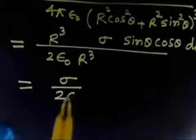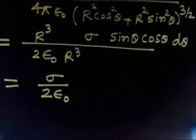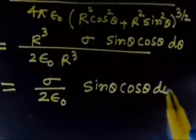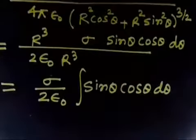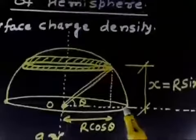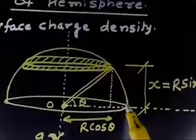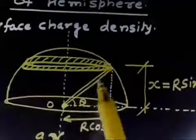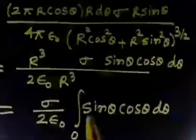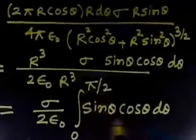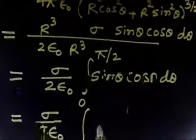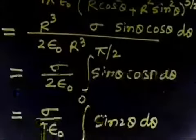So the electric field element dE equals sigma over 2 epsilon-naught times sine theta cosine theta d-theta. The integration limits run from 0 to pi by 2: at theta equals 0 you have the equatorial ring, and as theta increases the ring radius decreases until at theta equals pi by 2 you reach the pole. Using the identity sine theta cosine theta equals sin 2 theta over 2, this becomes sigma over 4 epsilon-naught times integral of sin 2 theta d-theta from 0 to pi by 2.